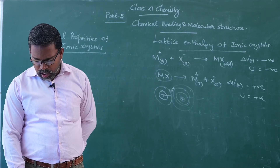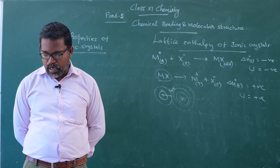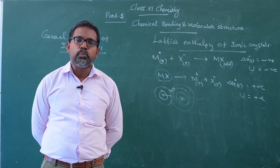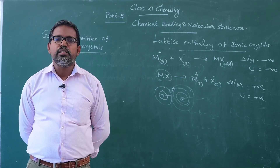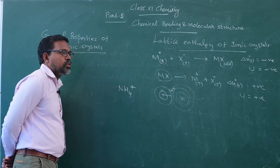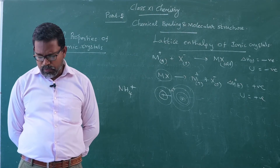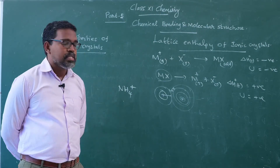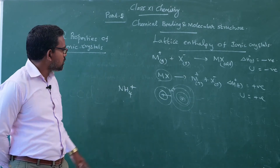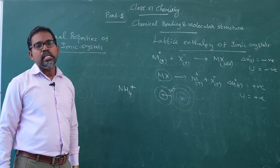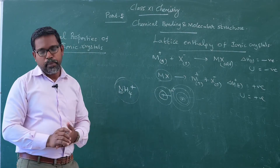The ionic compounds have cations derived from metallic elements and anions derived from non-metallic elements. However, the ammonium ion, NH4 plus, is an exception — both nitrogen and hydrogen present in the ammonium ion are non-metallic in nature. It is an exceptional case that forms the cation in a number of ionic compounds; for example, ammonium chloride is ionic in nature, yet its cation consists of nitrogen and hydrogen, both non-metallic.